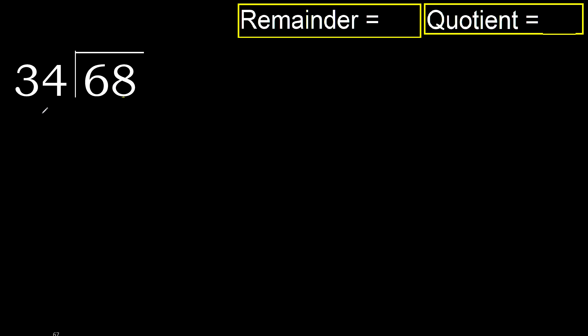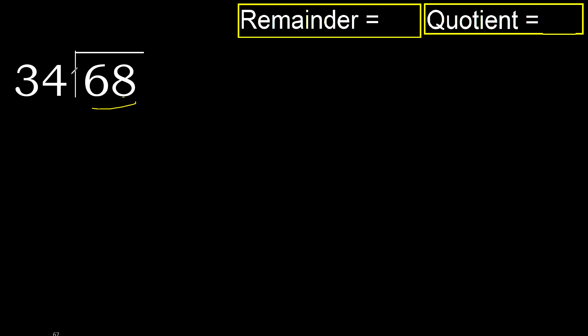68 divided by 34. 6 is less, therefore next. 68 is not less, therefore with 68: 34 multiplied by which number is nearest to 68 but not greater?